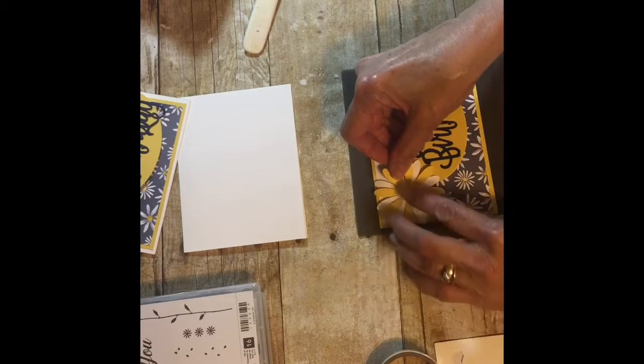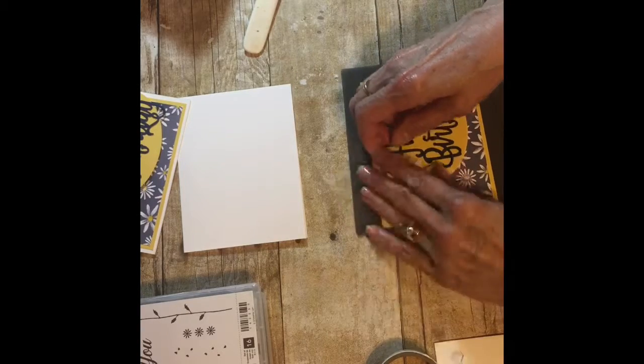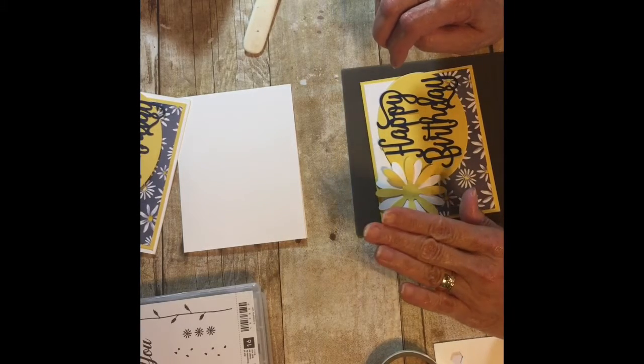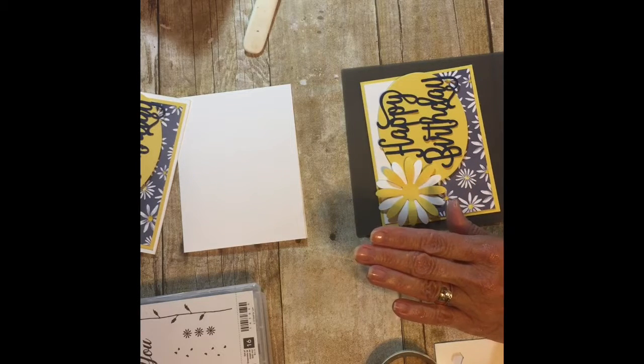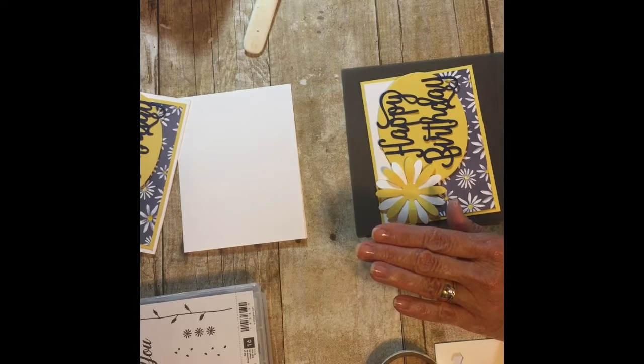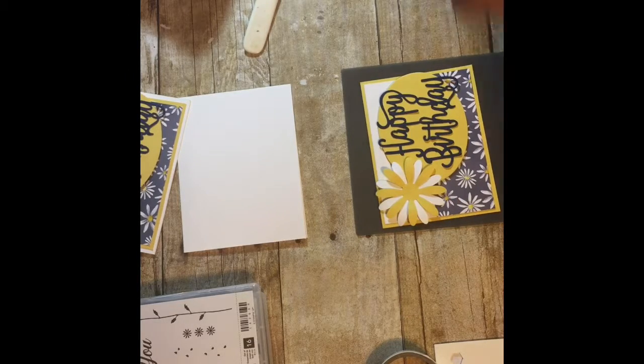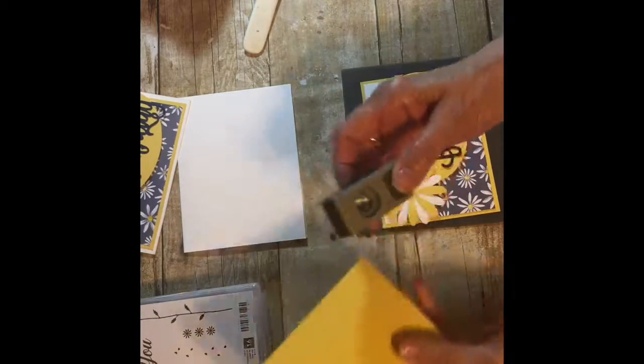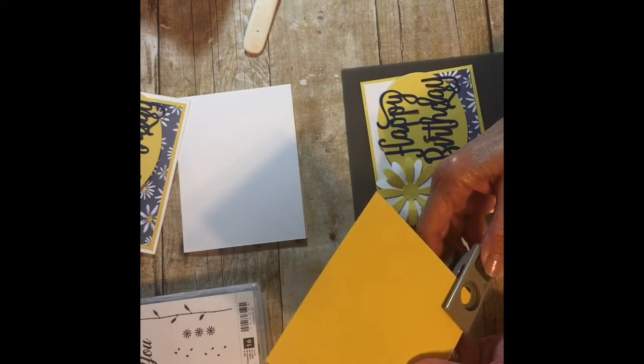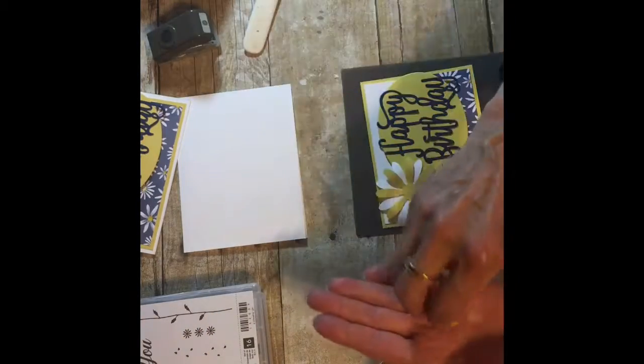I'm just going to take a piece of the Daffodil Delight and I'm going to punch out a half inch circle using our half inch circle punch.